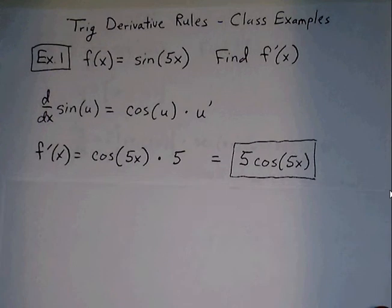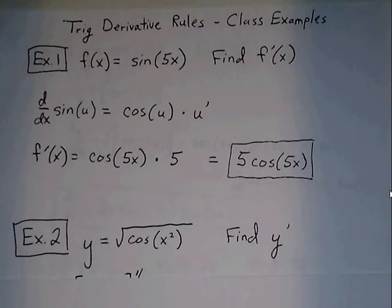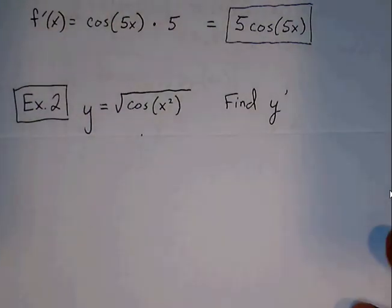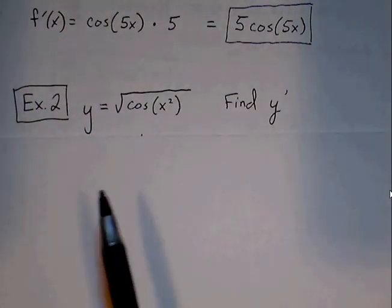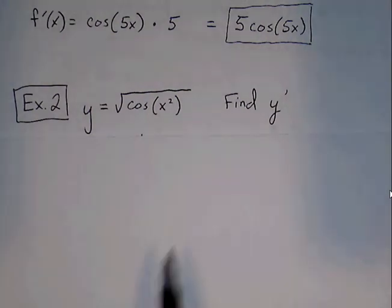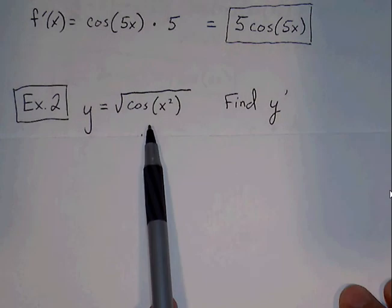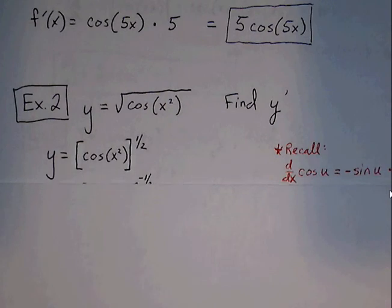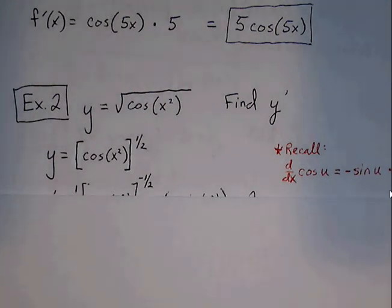Moving on to example 2. We have y is equal to the square root of cosine of x squared. First thing we do is whenever we see a radical, we want to always start by rewriting it with the function raised to a rational exponent. So we rewrite it as y is equal to cosine of x squared to the 1 half.